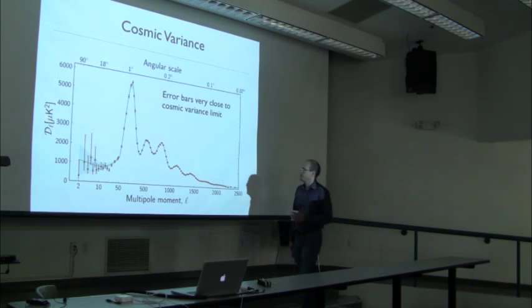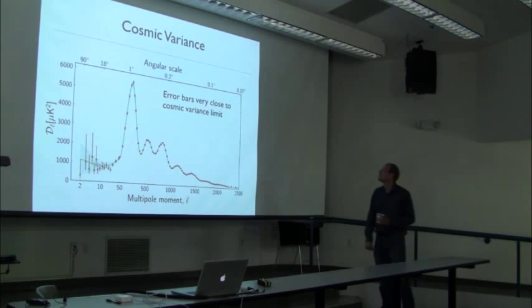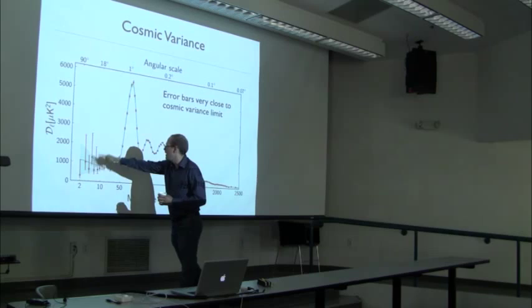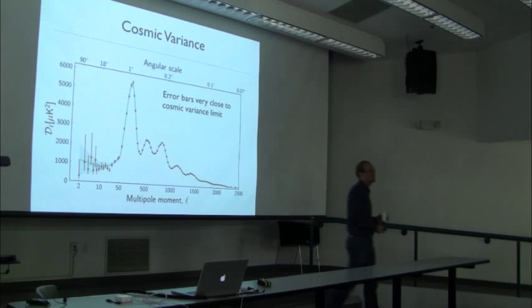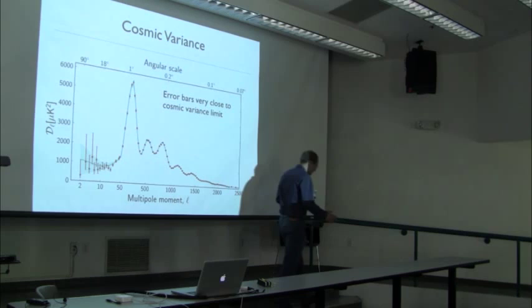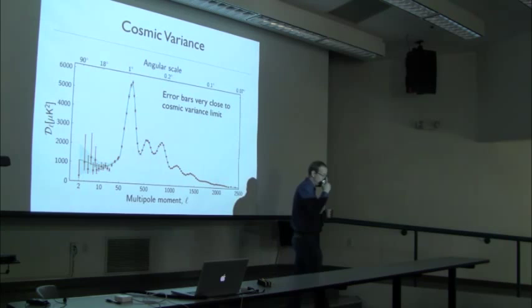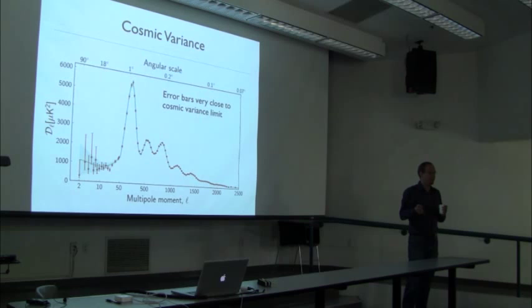Here again is the data — this is a generalization of taking A_LM times A_LM-star and summing over M, dividing by the number of M modes. Here are the error bars of the experiment and the green band showing what you'd expect from just cosmic variance. Comparing the size of these error bars to the green band, you're pretty close — this experiment is precise enough that it's kind of pointless to try and do it again.